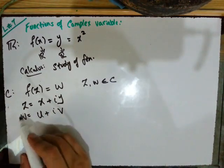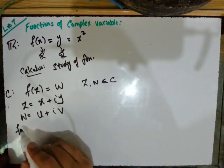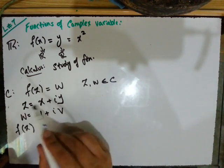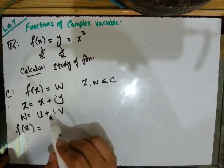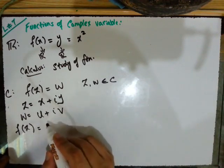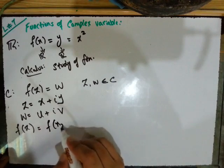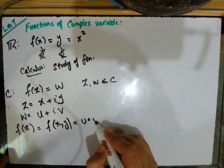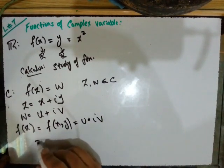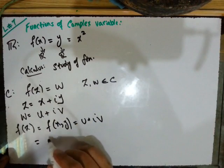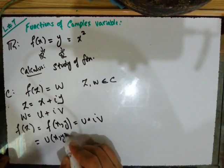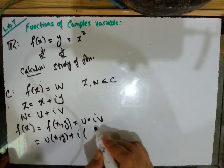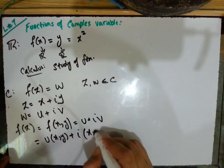So f of z is equal to u(x,y) plus i·v(x,y). Because this u is an x,y function and v is also an x,y function. So f of z can be written as u plus iv, where u is a function of x and y, and v is also a function of x and y.